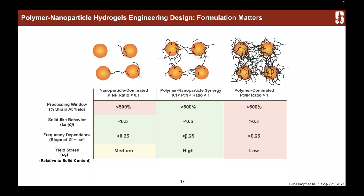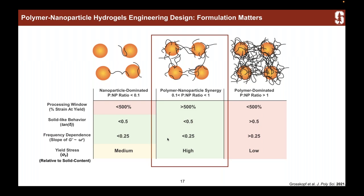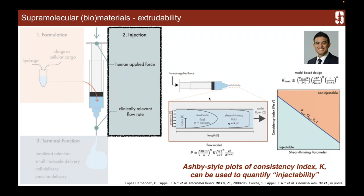Going forward, we thought we really wanted to be in this mid regime where we have this synergy and optimal properties. While we were able to use a traditional rheometer to measure properties relevant to post-injection, the key to our hydrogel is that it's really injectable. We thought we really need to understand injectability and how these materials behave in shear flow. A postdoc in particular, Hector Lopez, really focused his work on understanding this injectability — you have a human pushing the syringe, and in a shear-thinning fluid it follows this power-law behavior.